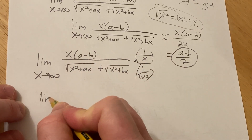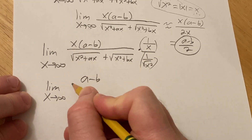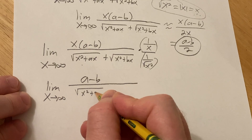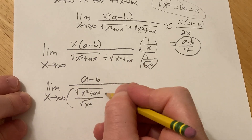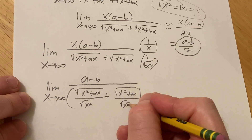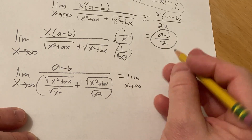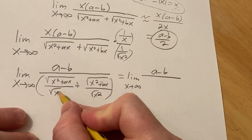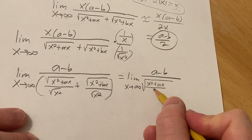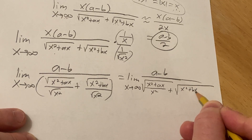The x's cancel on top, giving a minus b. On the bottom, distributing gives square root of (x squared plus ax) over x squared, plus square root of (x squared plus bx) over x squared. We then split each fraction: x squared over x squared plus ax over x squared, and similarly x squared over x squared plus bx over x squared.